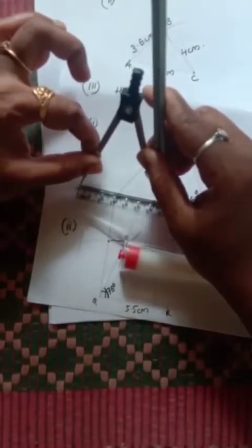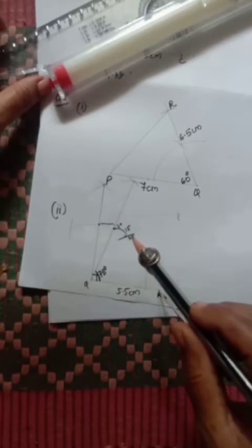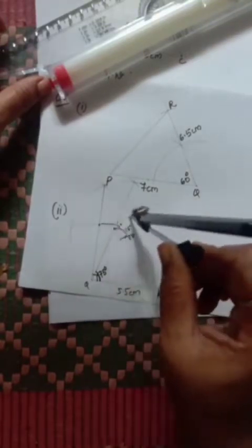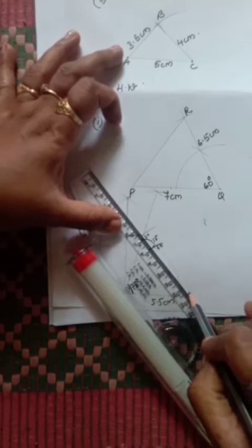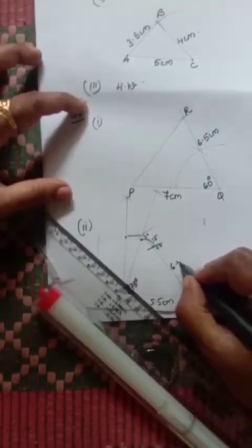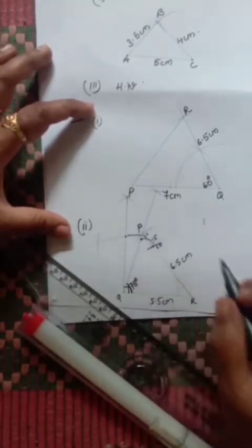Take radius 6.5 cm in compass and from R make an arc that cuts the 75° angle arm from Q. That cutting point, joined to R, gives you point P. That is your required triangle PQR.